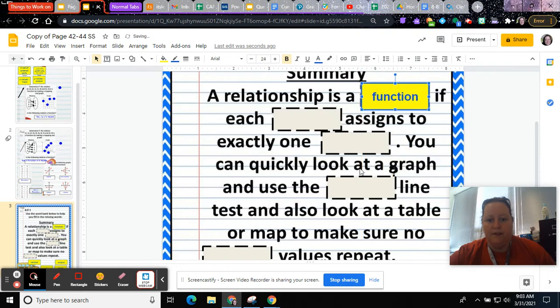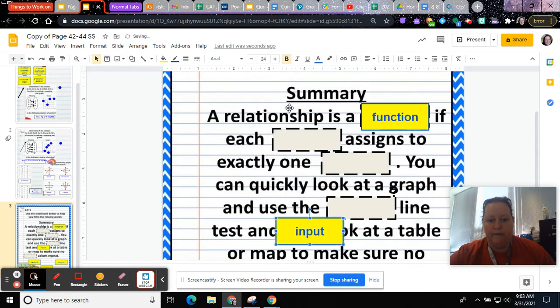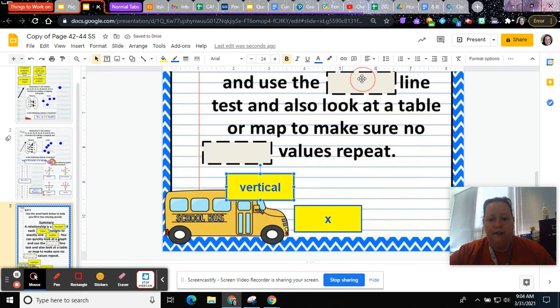This is going to be some good notes for you. If each input assigns to exactly one output, you can quickly look at a graph and use the vertical line test.